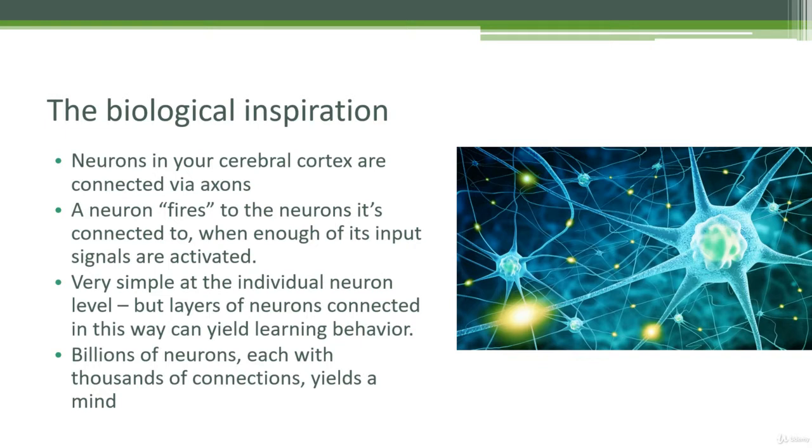But when you start to have many, many of these neurons connected together in many different ways with different strengths between each connection, things get very complicated. This is kind of the definition of emergent behavior. You have a very simple concept, a very simple model, but when you stack enough of them together, you can create very complex behavior. And this can yield learning behavior.